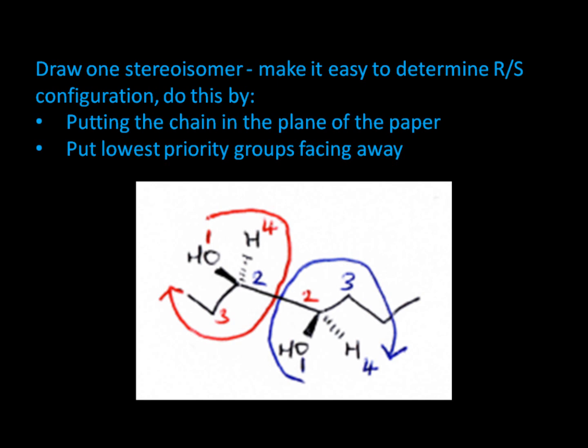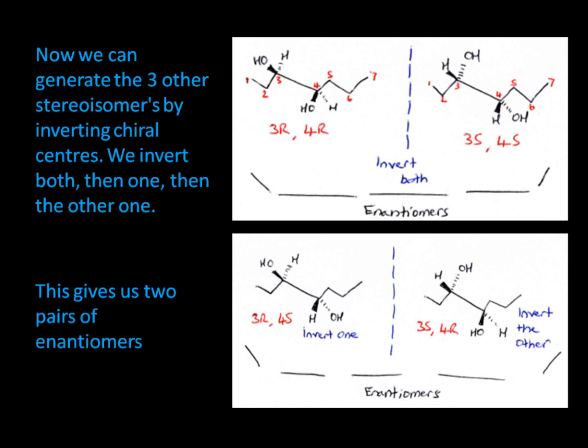Now we can generate the three other stereoisomers by inverting chiral centres. We invert both, then one, and then the other. For example, we form S,S, R,S, and S,R.